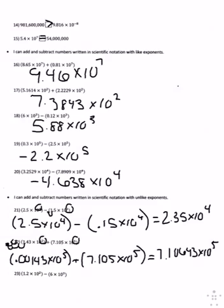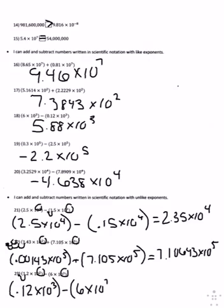Number twenty-three, we want to make the exponents the same, so you are going to keep the 3 and change the 2 into a 3 by moving the decimal up one time. The problem is 0.12 times 10 to the 3rd minus 6 times 10 to the 3rd. Now that the exponents are the same, you subtract 0.12 minus 6, which gives you negative 5.88 times 10 to the 3rd power.